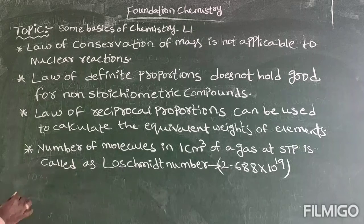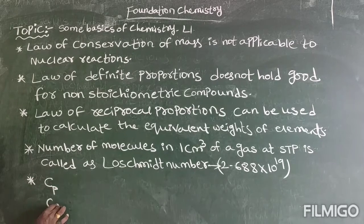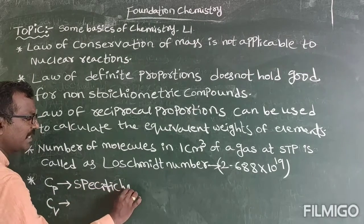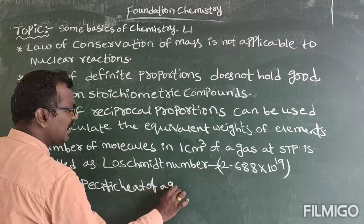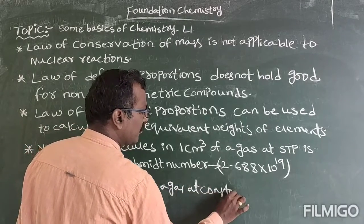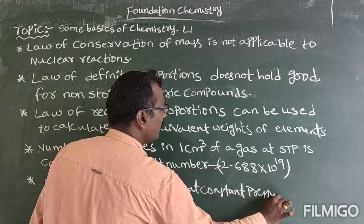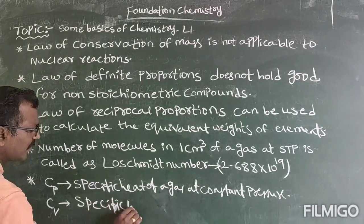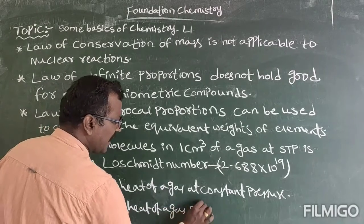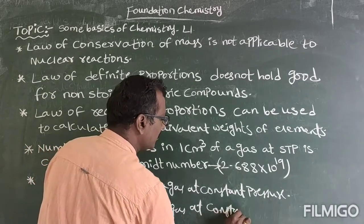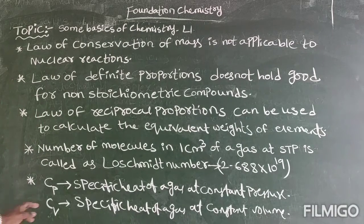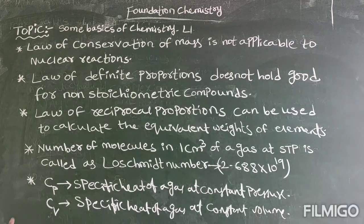Next we have CP and CV. CP means the specific heat of a gas at constant pressure, and CV means the specific heat of a gas at constant volume.